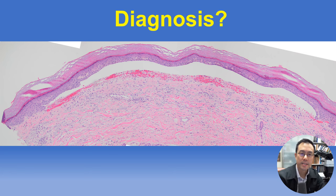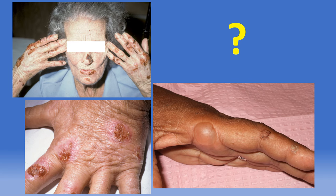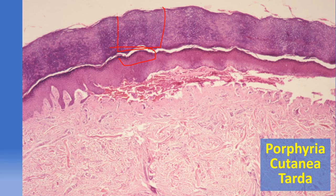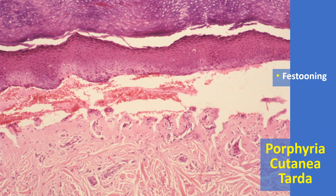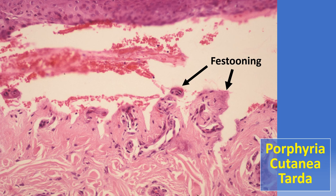Here is a subepidermal blister for histologic diagnosis — is the host response mostly neutrophils, eosinophils, or cell-poor? Porphyria cutanea tarda (PCT), mediated by deficiency in the enzyme uroporphyrinogen decarboxylase, is a classical subepidermal cell-poor blister typically occurring on chronically sun-exposed acral skin, evidenced by thick compact stratum corneum, hypergranulosis, and lack of hair follicles, with preservation of the dermal papillae within the subepidermal blister floor — a feature known as festooning, characteristic but not diagnostically specific for PCT.